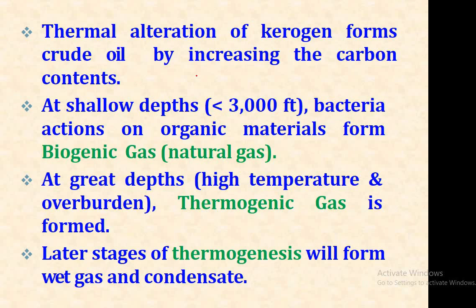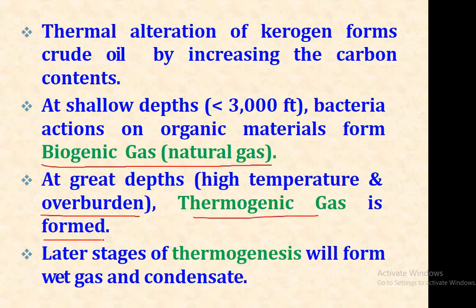Thermal alteration of kerogen forms crude oil by increasing the carbon content. At shallow depths of less than 3,000 feet, bacterial action on organic material forms biogenic gas, or natural gas. The thermogenic process also forms biogenic gas and condensate.